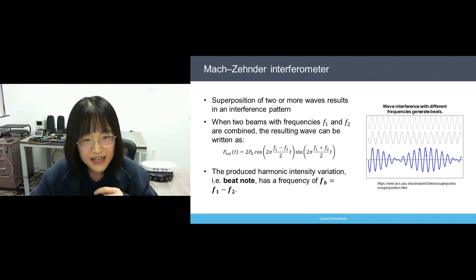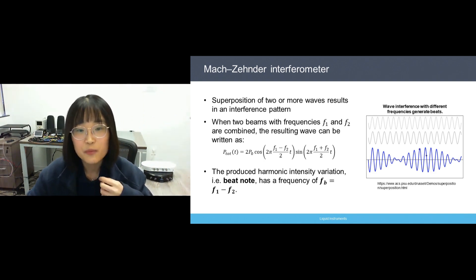One important aspect revealed from the formula and animation is that the beat node, which corresponds to the amplitude envelope of the new waveform, occurs at the difference frequency between F1 and F2. This will be the guide for our subsequent interferometer measurements.